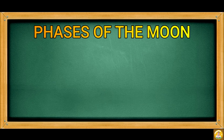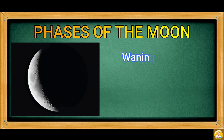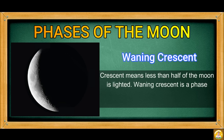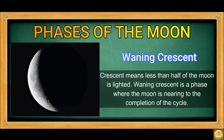The last phase of the moon is Waning Crescent. Crescent means less than half of the moon is lighted. The Waning Crescent is a phase where the moon is narrowing toward the completion of the cycle.